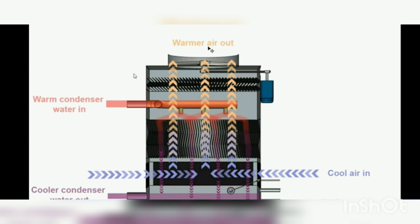The warm water goes inside the cooling tower and is sprayed with the help of spray nozzles onto the packing, also known as fill. In the fill, ambient cooling air comes in contact with the warm water, and because of the temperature difference, heat transfer takes place. After the heat transfer, the cooling air becomes warm and exits via the fan at the top. The cooled water is then collected at the bottom basin.